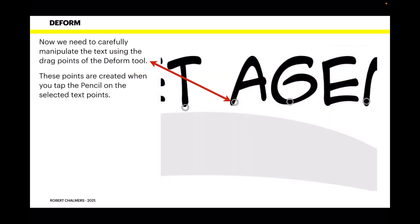We need to carefully manipulate the text using the drag points of the deform tool. Now these points are created when you tap your pencil, or your finger if you've got a nice sensitive finger, on the selected text points. Now you can see there I've just tapped my Apple pencil on the tip of each of those letters, and the bottom of the G, and a couple of the other ones along there. I've much enlarged this of course, so you can see it clearly. But all that's accomplished by just selecting the deform tool, and then tapping the pencil on the letter, where you want to drag the letters around.